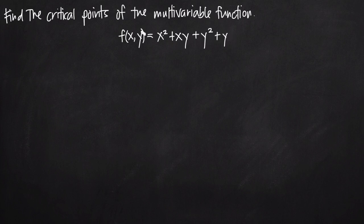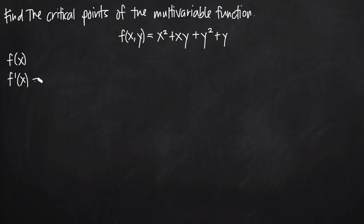If you'll remember from calculus 1, when we talk about finding the critical points of a single variable function — for example, if we have a function f and we want to find its critical points — we take the derivative to get f prime of x, set it equal to 0, and solve for x. We're going to follow those same steps with this multivariable function, but instead of a single derivative, we have to take partial derivatives.